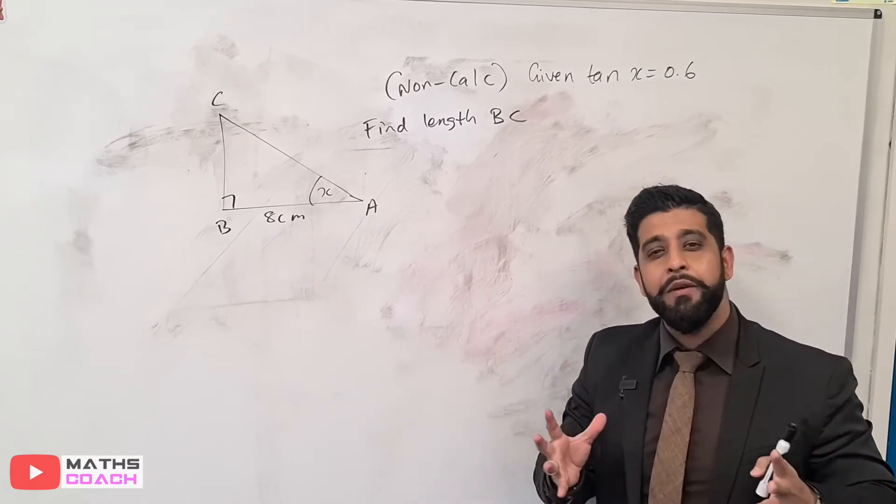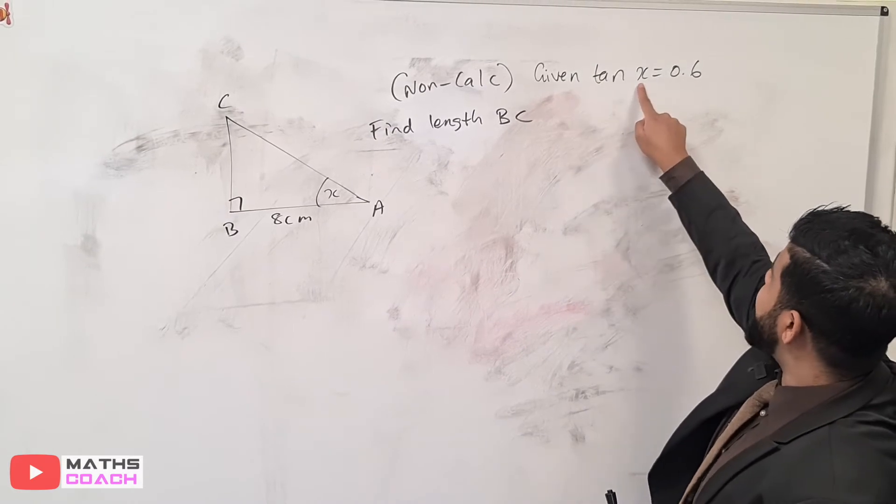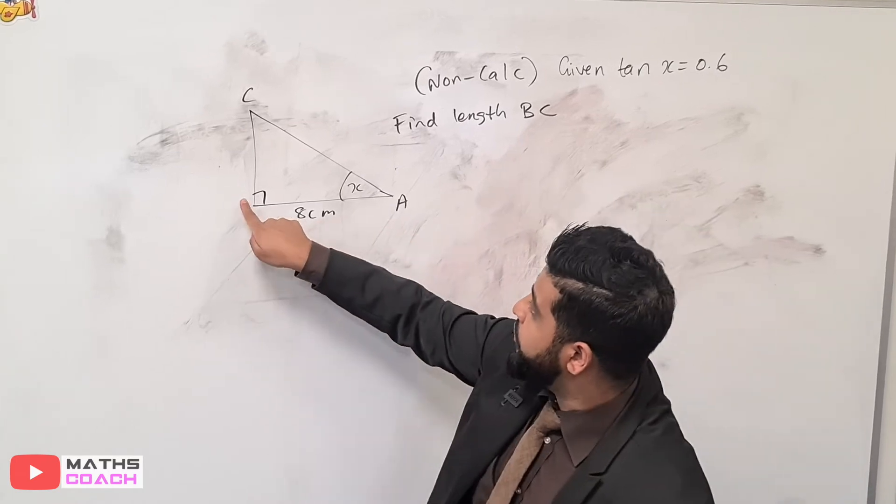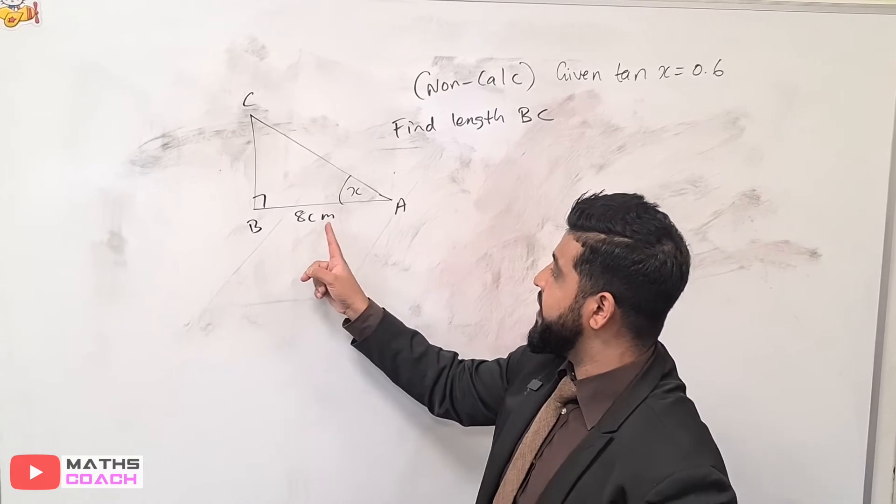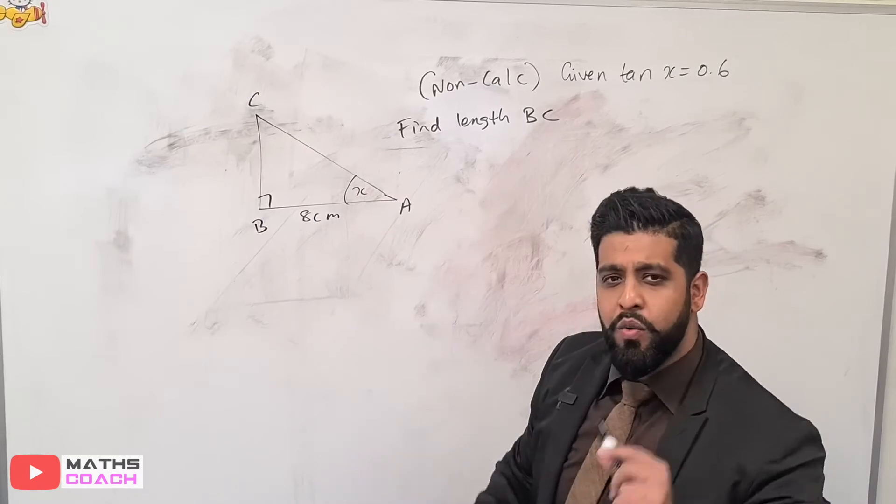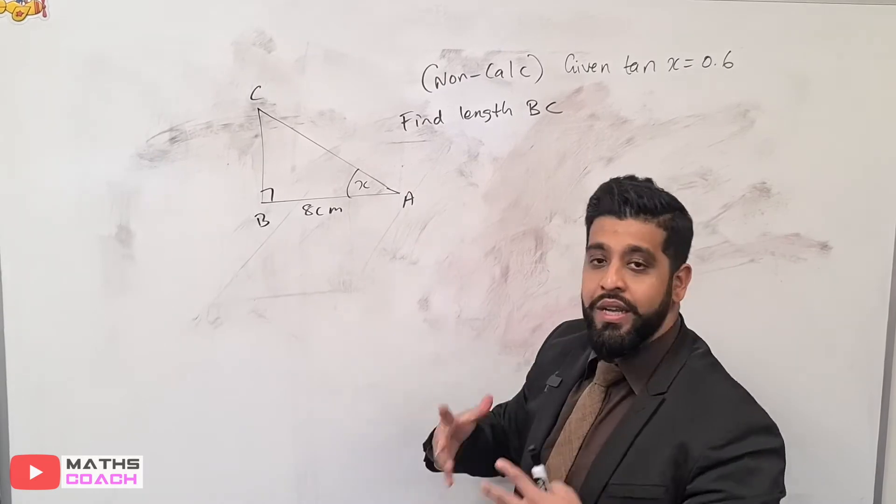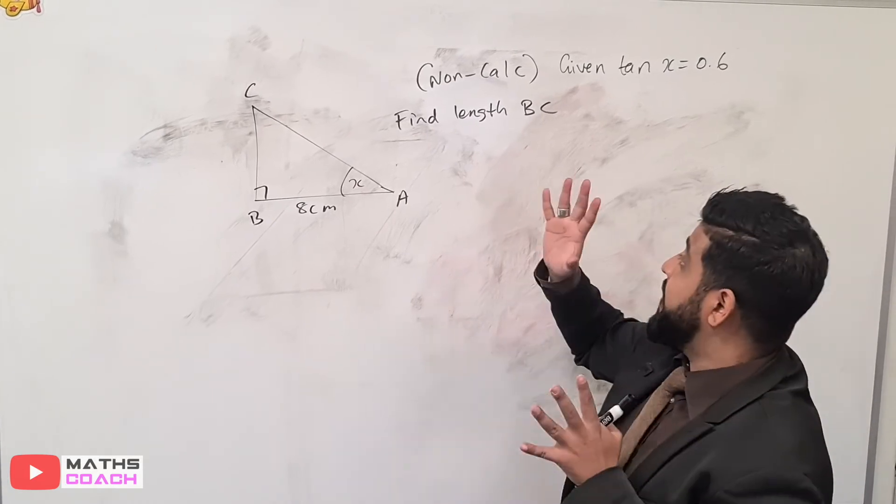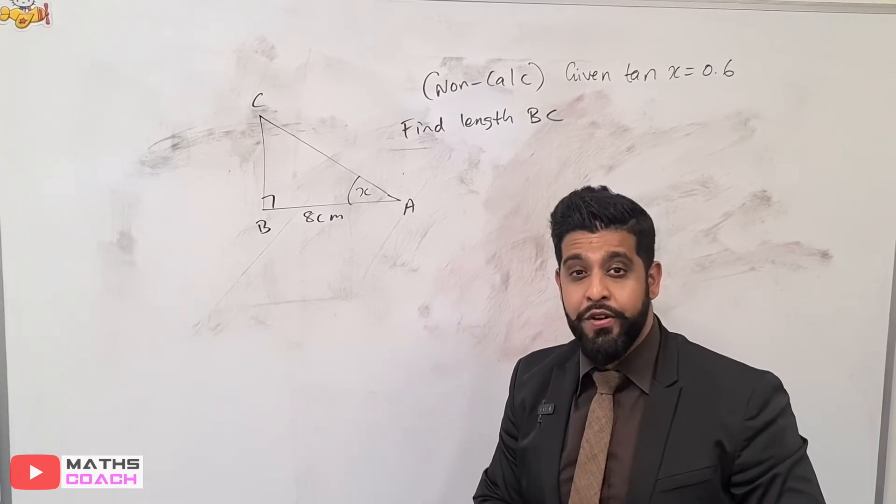Have a look at this next question. It's a typical question that may appear on a non-calculator paper, higher of course. You're given that tan X is equal to 0.6, find the length BC. You want to find the length BC. You're also given the information that AB, length AB here, is 8 centimetres. And you are finding the length BC. What's strange about this question is that X here is given as an unknown. The angle is unknown. First assumptions may be that you need to find X, but the question specifically says that you need to find the length BC. Have a think about this question.